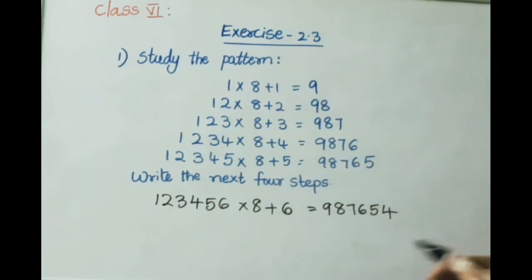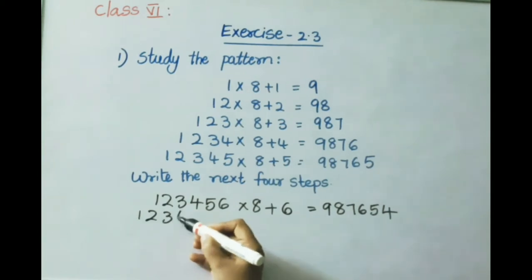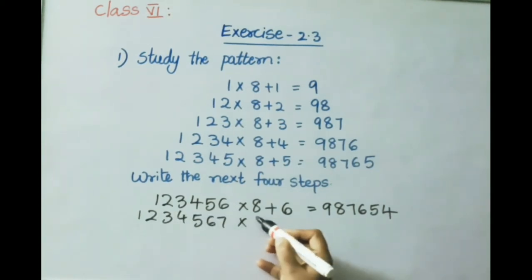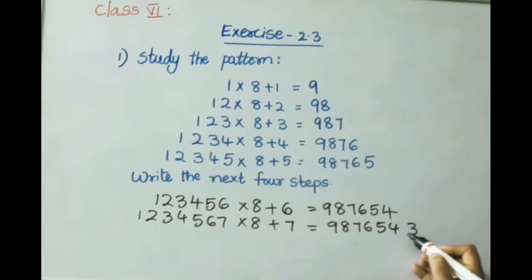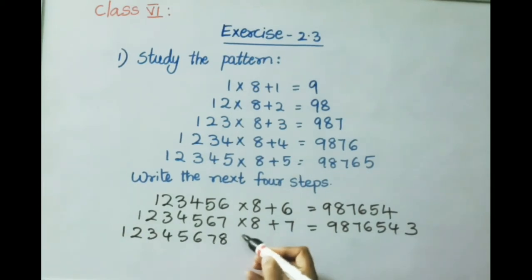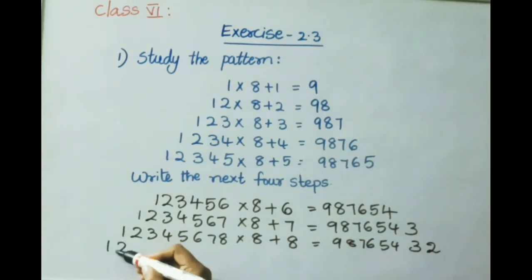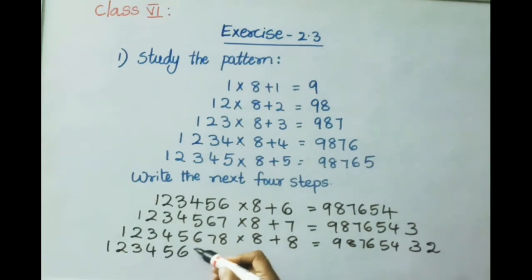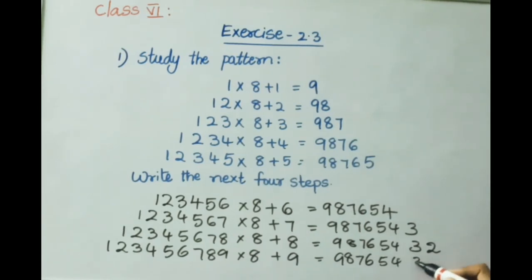Continuing the pattern for steps 7, 8, and 9: Step 7 is 1234567 into 8 plus 7, giving the answer 98765433. Step 8 is 12345678 into 8 plus 8, giving 987654322. Step 9 is 123456789 into 8 plus 9, giving 987654321.